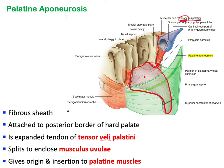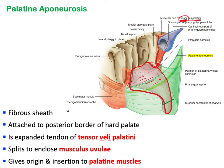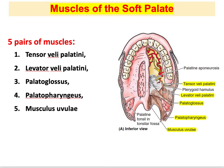The aponeurosis formed by the tensor veli palatini serves as the origin and insertion point for the five palatine muscles. Looking at an inferior view of the hard and soft palate, the tensor veli palatini muscle has its tendon expanded to form the palatine aponeurosis.